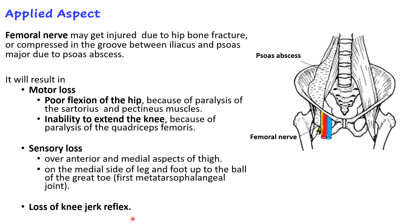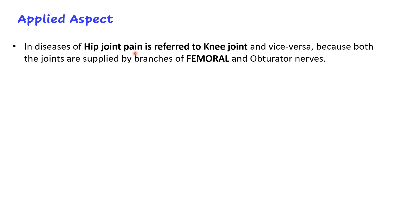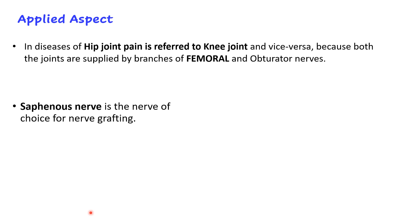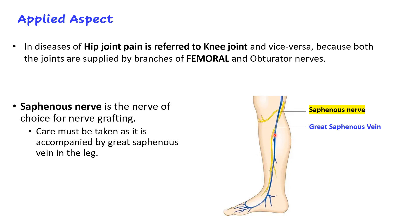Referred pain between the hip and knee joints occurs because both are supplied by branches of the femoral nerve as well as the obturator nerve. The saphenous nerve is the nerve of choice for nerve grafting because it is long and superficial in the leg, but care must be taken as it is accompanied by the great saphenous vein and the two structures cross each other at one point.